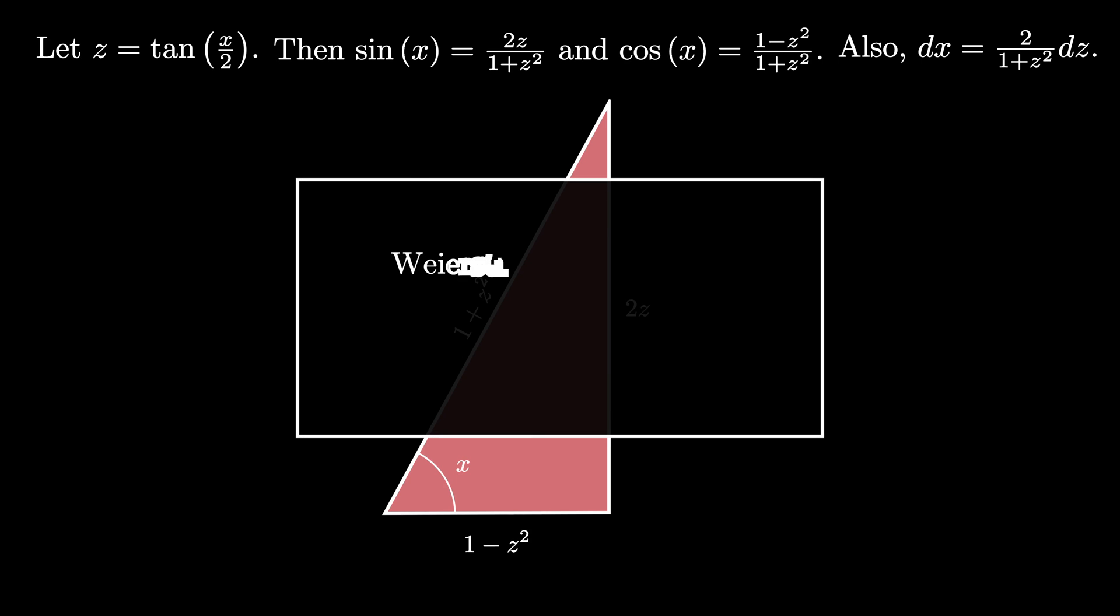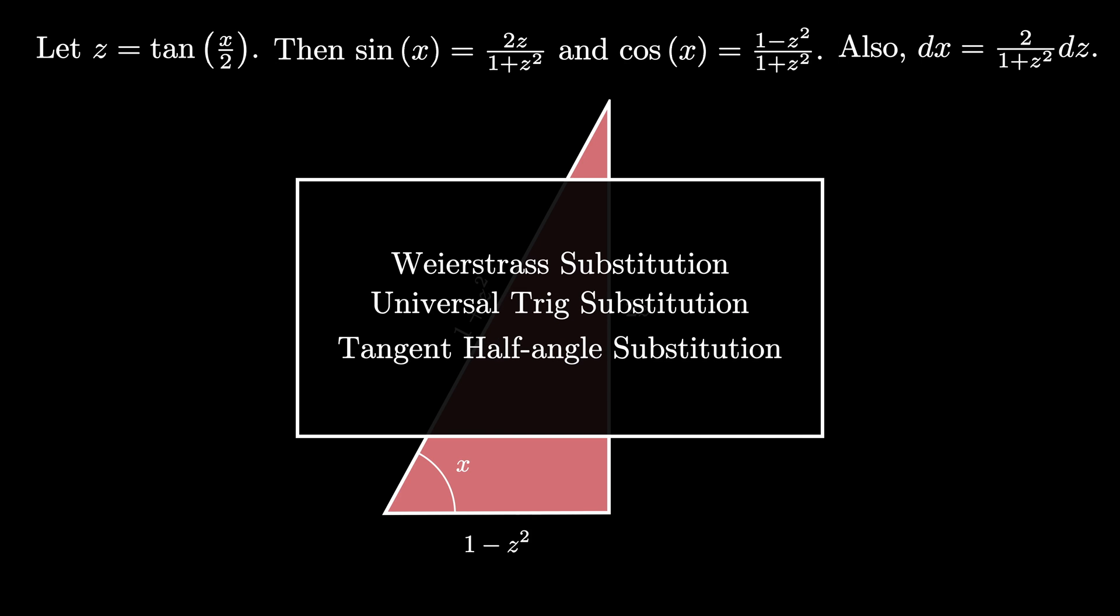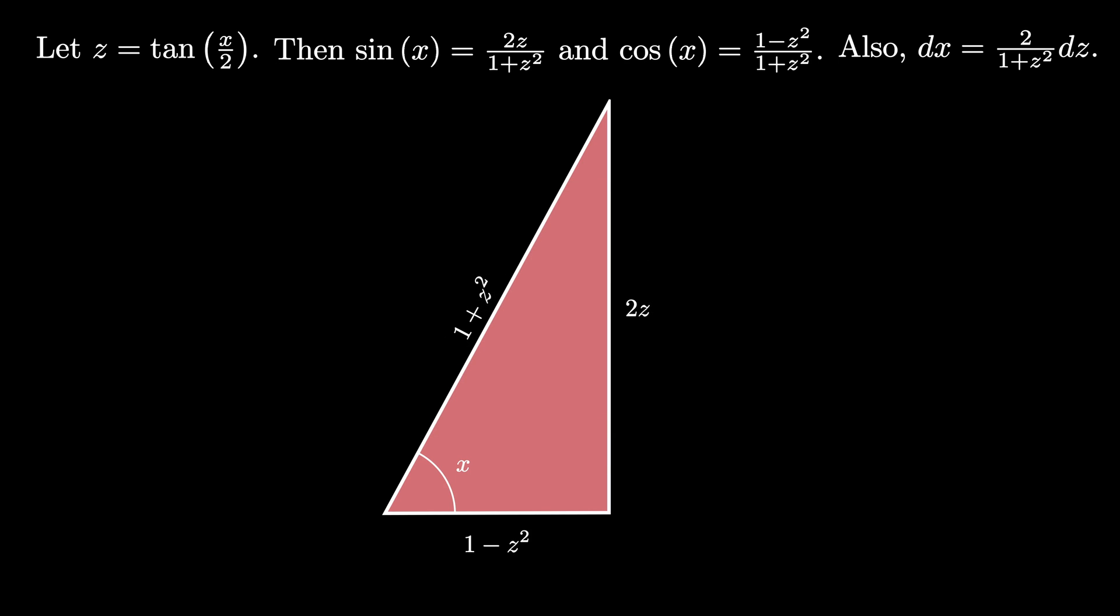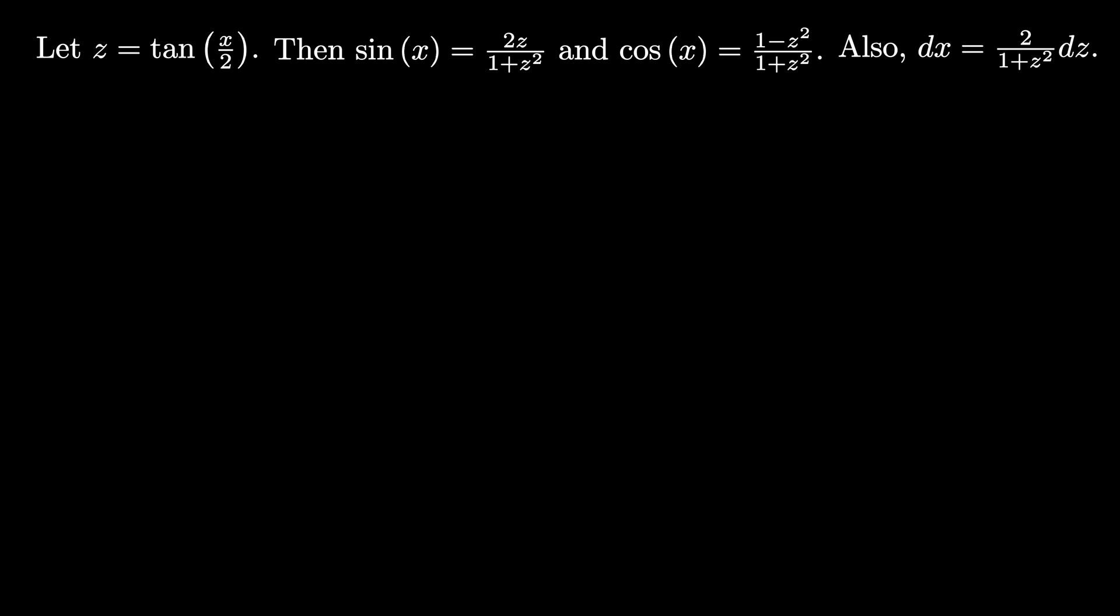Using the substitution z equals tangent of x over 2 with these properties is called the Weierstrass substitution, or sometimes universal trig substitution, or sometimes the tangent half angle substitution. It can be used in a variety of situations when you're not sure how to perform a particular integral. Let's see this in action in a couple of examples.